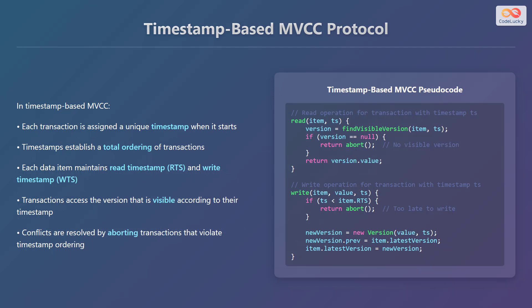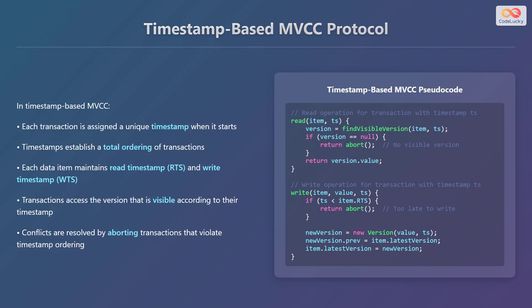In a timestamp-based Multiversion Concurrency Control protocol, each transaction is assigned a unique timestamp when it starts. These timestamps establish a total ordering of transactions. Each data item maintains a read timestamp (RTS) and a write timestamp (WTS). Transactions access the version that is visible according to their timestamp. Conflicts are resolved by aborting transactions that violate timestamp ordering. As you can see in the pseudocode for read operation, first the system finds the visible version to a transaction of a timestamp. If no visible version is found, then the read transaction is aborted, otherwise the value is read.